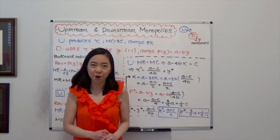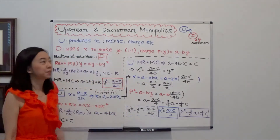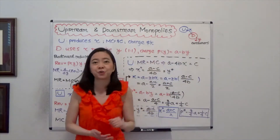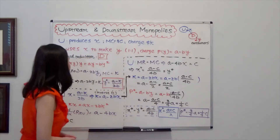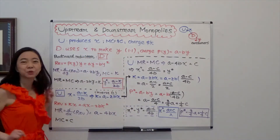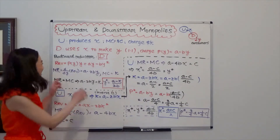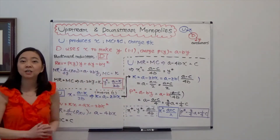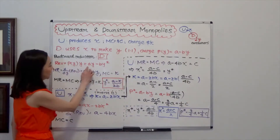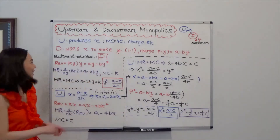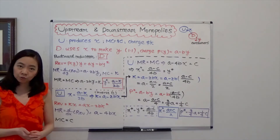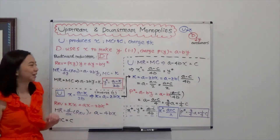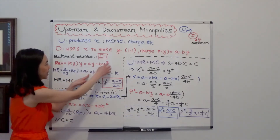So we're going to solve this problem. We will use backward induction, meaning we're going to solve for the problem for Company D first and then go back to solve for the problem of Company U. So we know revenue is equal to price times quantity, and price PY is A minus BY. That times Y is equal to revenue. Multiply that out, you get AY minus BY squared. And with the revenue function, we can find the marginal revenue — the derivative of revenue with respect to quantity — and that is equal to A minus 2BY.